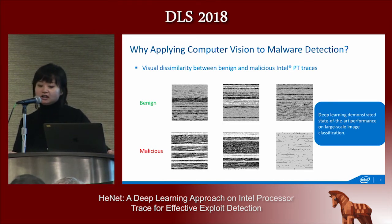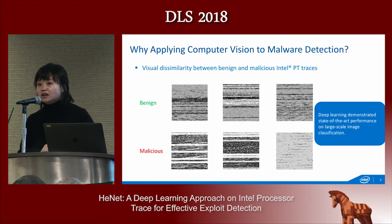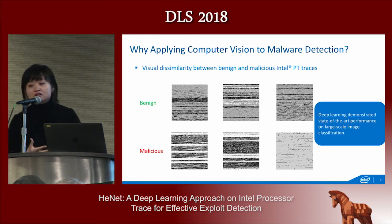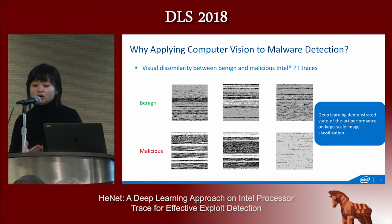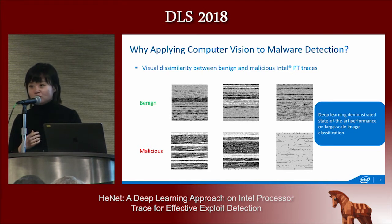Such visual inspection gives us foundational evidence for applying computer vision. Particularly, deep learning has demonstrated state-of-the-art performance on large-scale image classification problems. In our analysis, we wanted to leverage the information learned from computer vision on natural images and apply it to this problem of control flow packets.